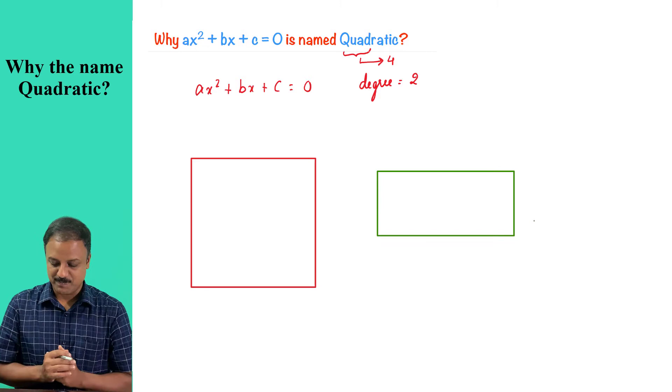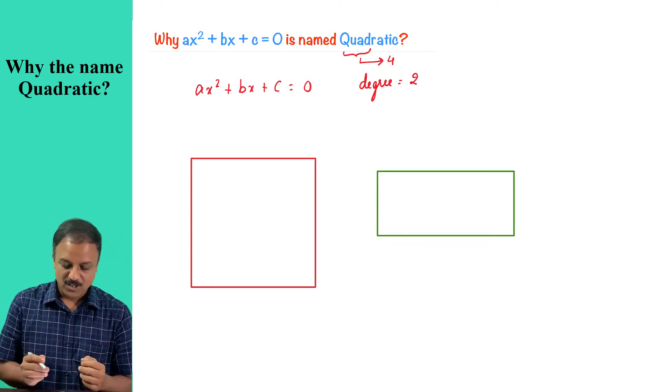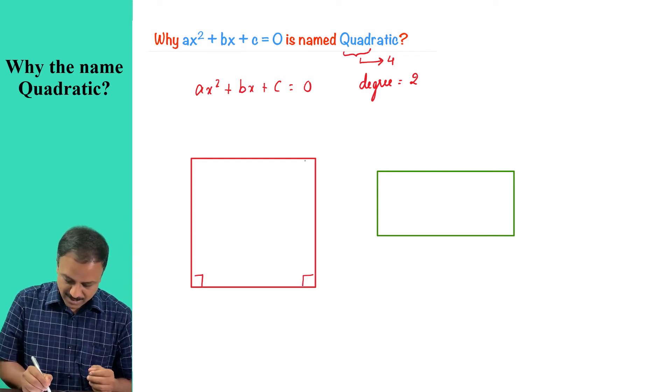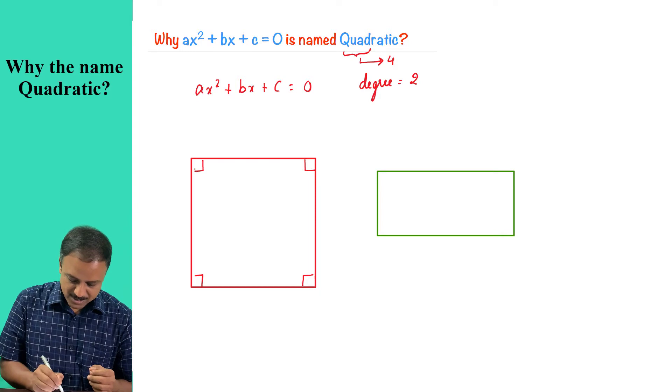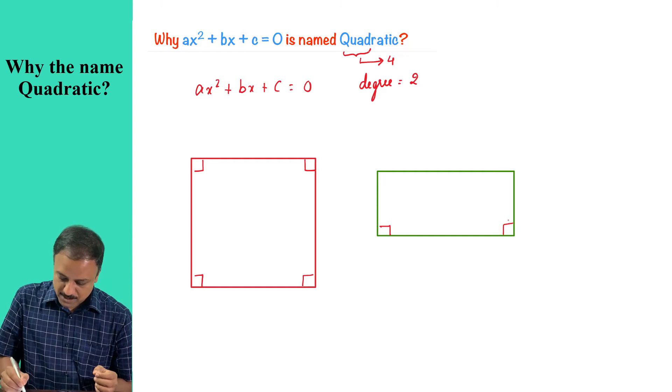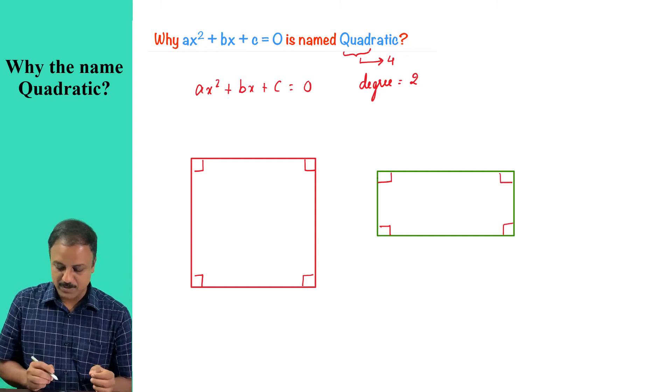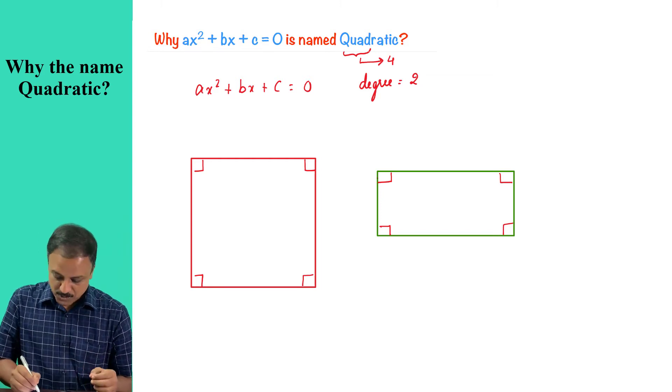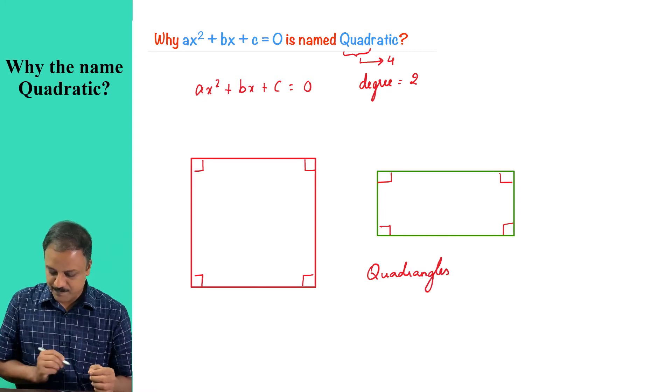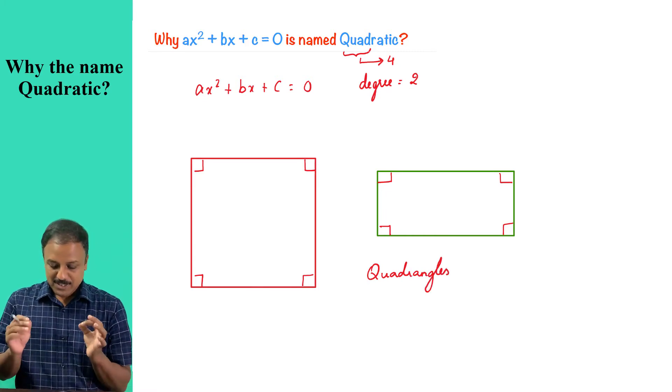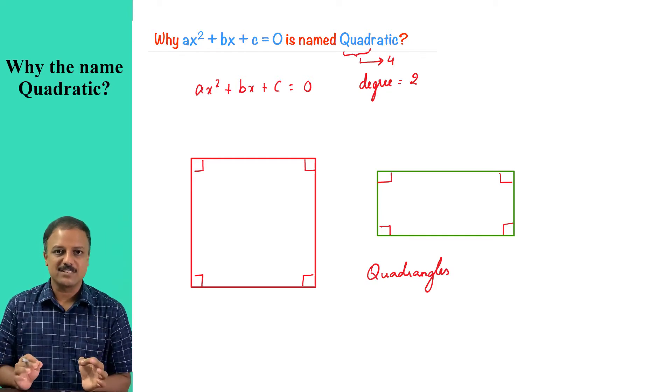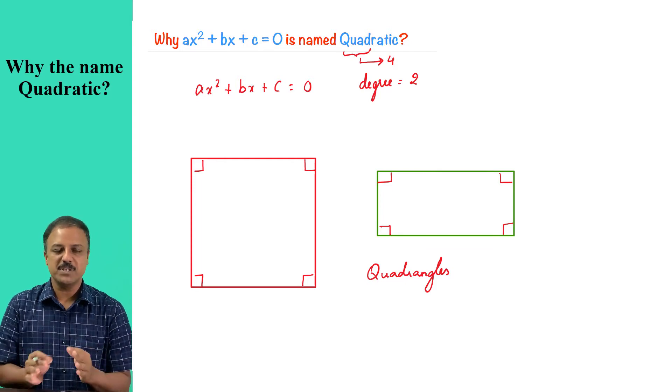Why are they very special? These two quadrilaterals have all four angles to be same. So you can see that all the interior angles of these quadrilaterals are perfectly 90 degrees. So these two, that is a square and a rectangle, are given a special name called quadrangles. So this quadrangle is a special name given to quadrilaterals where all four angles happen to be the same.